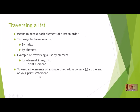In our first lecture we learned there are two ways to traverse a list — traversing means to go and access each element in order. The two ways are by index or by element. Traversing by element is handy whenever you want to access every element and don't need to know the index, such as printing or searching through the whole list. But sometimes you need to traverse by index because the position matters.